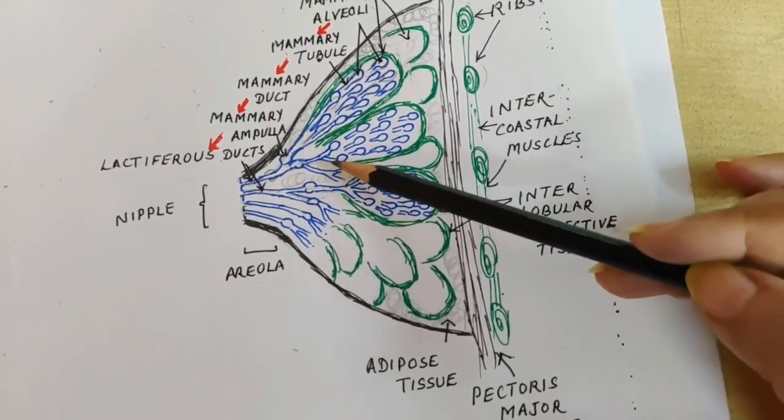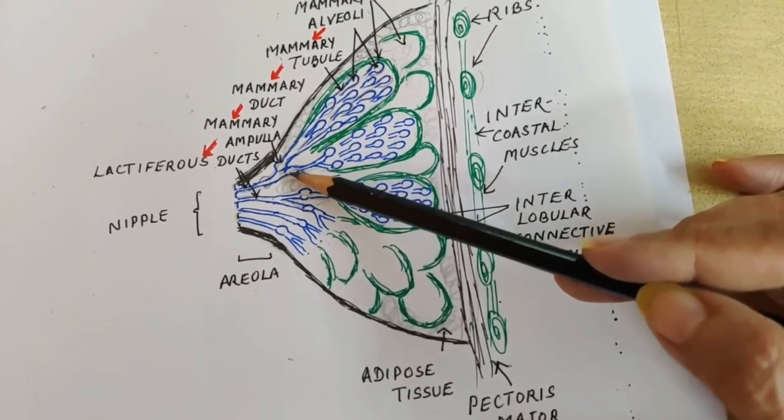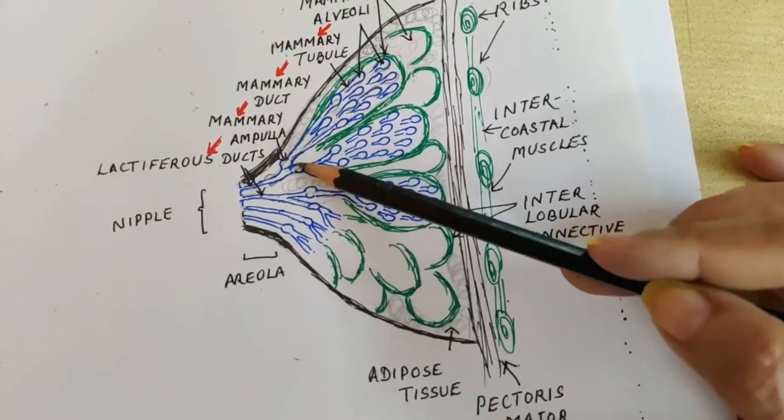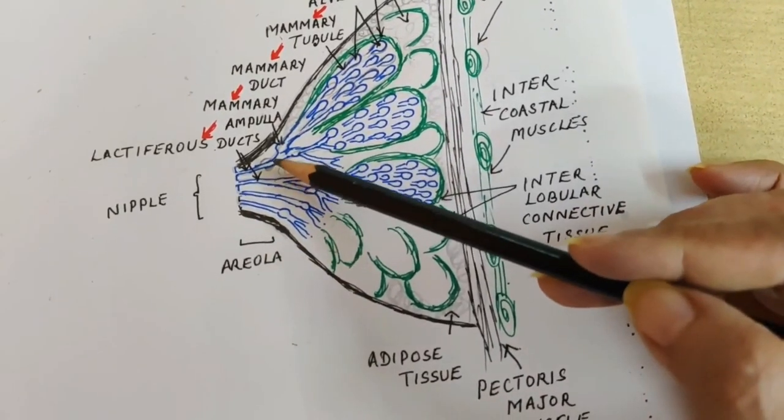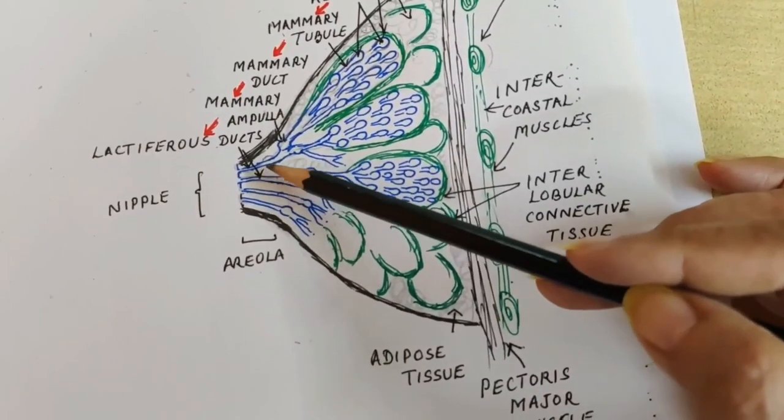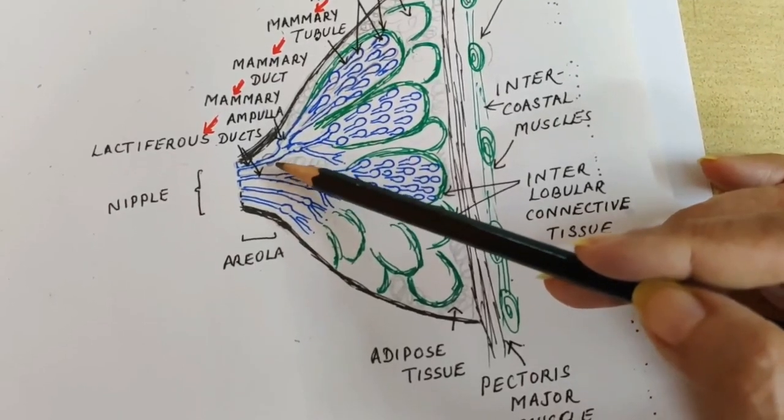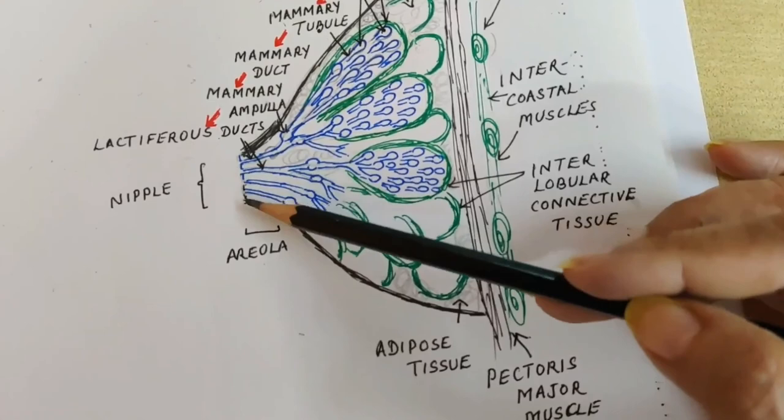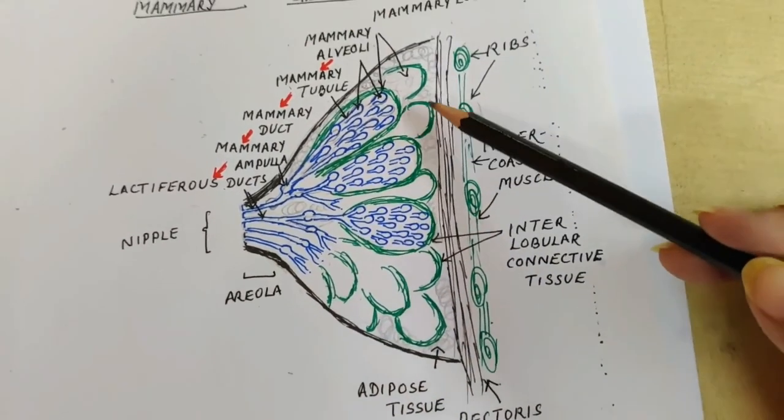various tubules join each other in a little wider portion called mammary ampulla. Mammary ampulla will take the milk to the lactiferous ducts. Few of them will open at the nipple. So this is how the